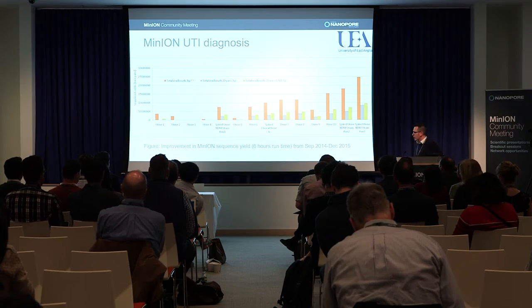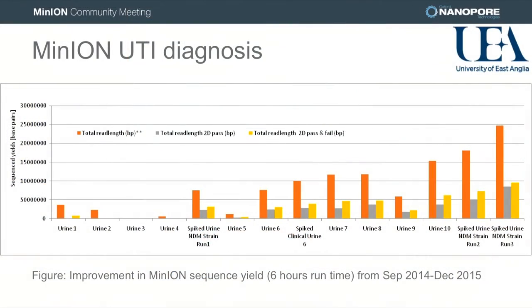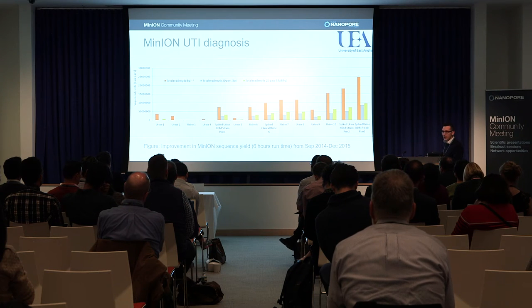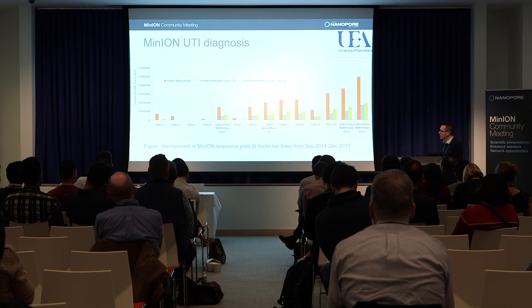This graph shows ten urine samples we've done over around a year, and we've also done some spiked urine samples along the way, spiked with a nasty NDM strain of E. coli — a highly drug-resistant strain. You can see that over time things have gotten a lot better; we're on a steady increase in the total yield of data we get from each flow cell.